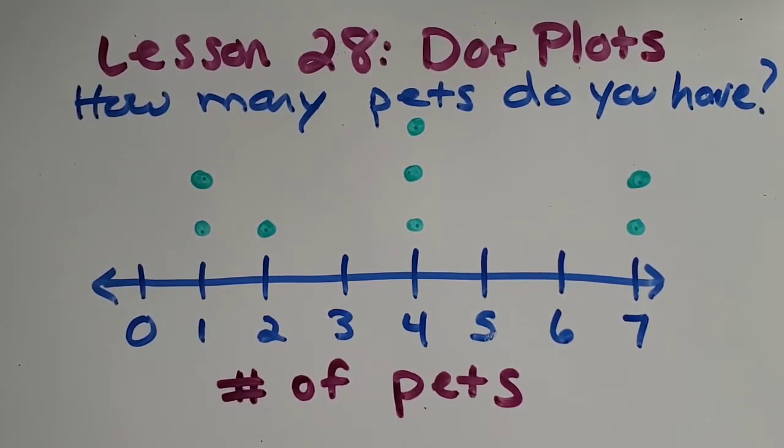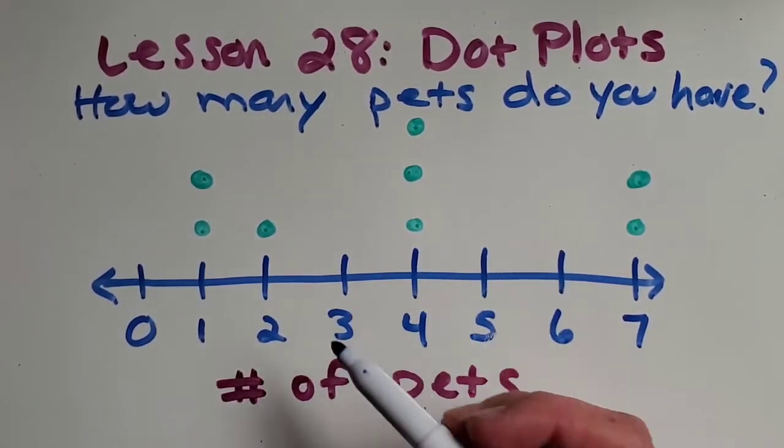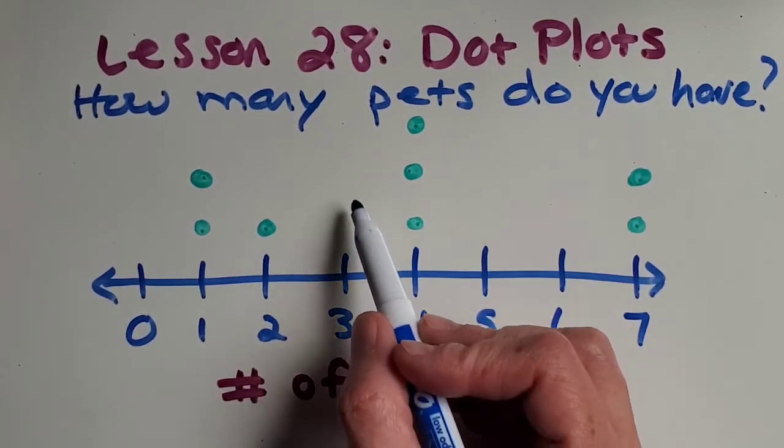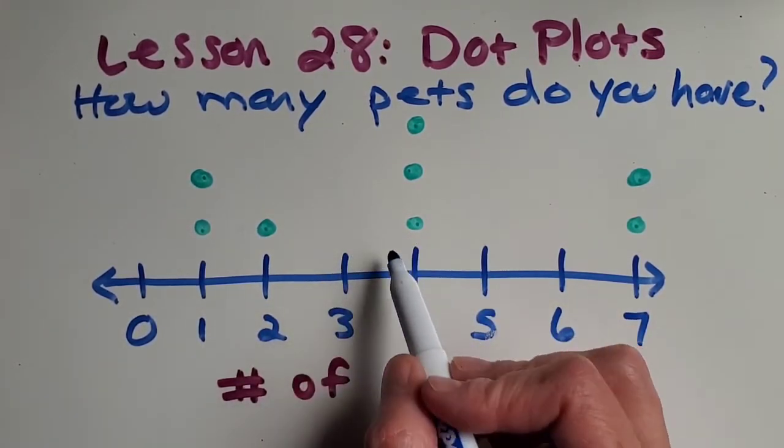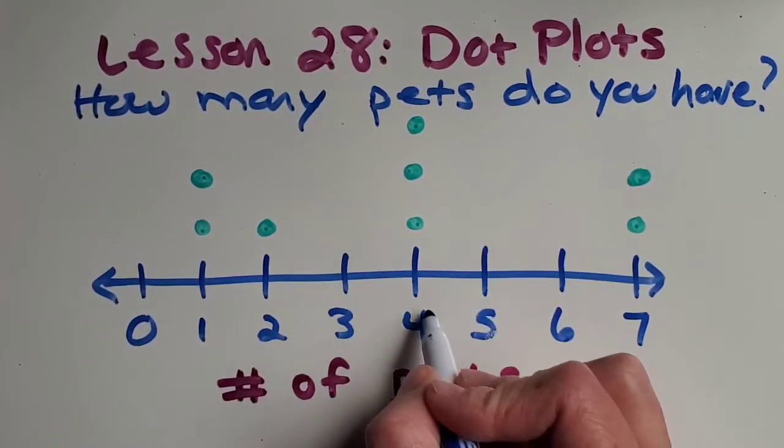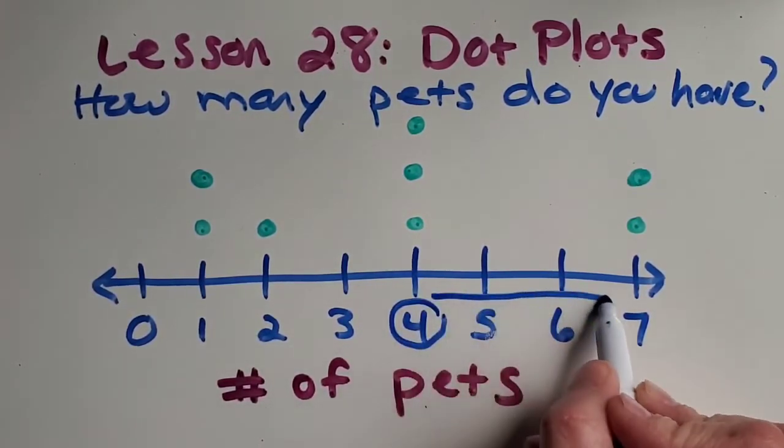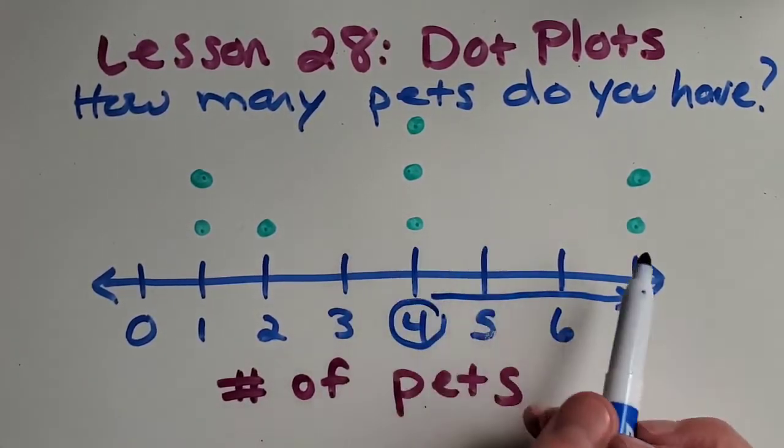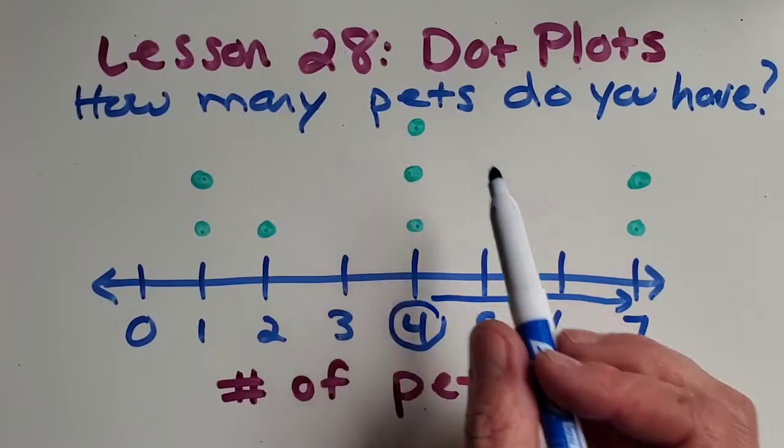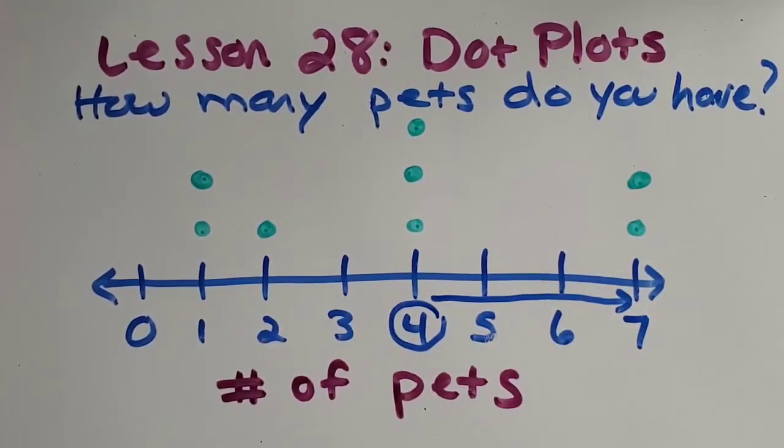And we'll use the same dot plot to answer a couple questions that are pretty common when it comes to dot plots. So here's a very common question. If I asked you, how many people have more than three pets? What do you think? Okay, so you probably have a good idea, but I like to just go like this. So if it's more than three, I'm just looking for anything here and up. Okay, so I'm counting, I'm just counting dots. One, two, three, four, five. So the answer is five. Five people have more than three pets.